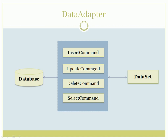Data Adapter is composed of four commands: Insert Command, Update Command, Delete Command, and Select Command. Whenever we fire a Select Command it fetches data from the database and stores it in a Data Set. Whenever we make changes in a Data Set — like inserting a row, changing an existing row, or deleting a row — the Data Adapter will fire the respective commands.